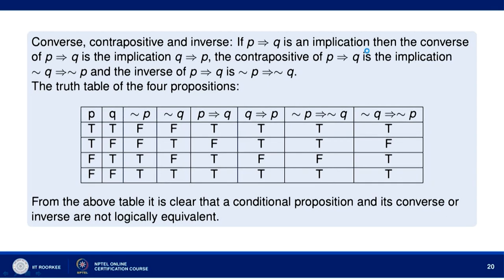Now let us consider the converse, contrapositive, and inverse of a conditional proposition. If P implies Q is an implication, then the converse is Q implies P, the contrapositive is not Q implies not P, and the inverse is not P implies not Q. Let us form truth tables for all four: P implies Q, its converse Q implies P, its contrapositive not Q implies not P, and its inverse not P implies not Q.